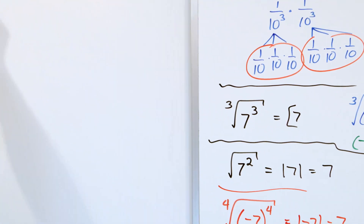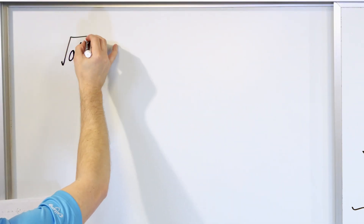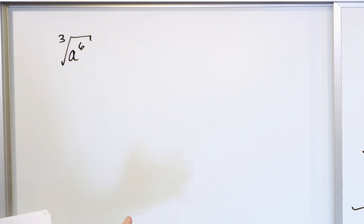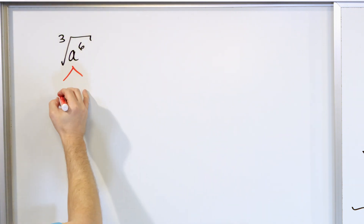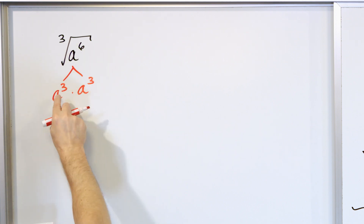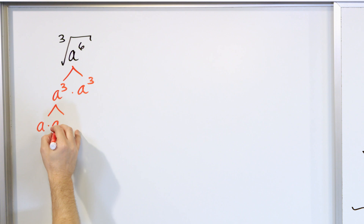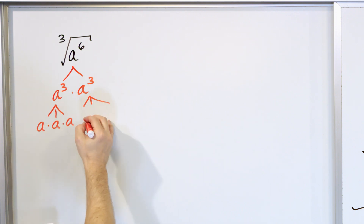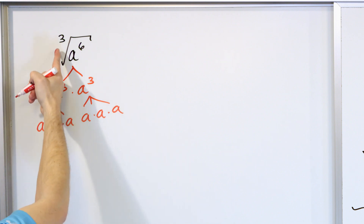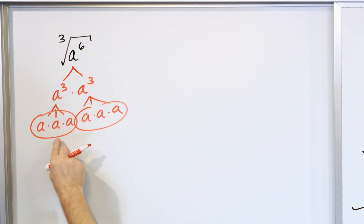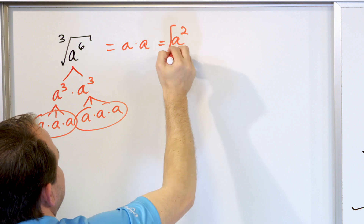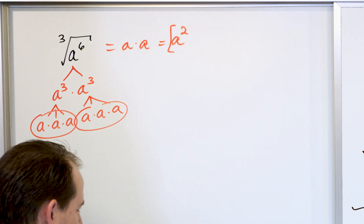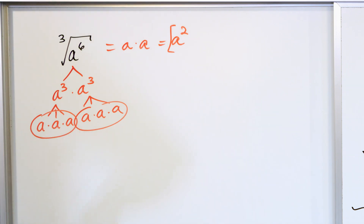Let's think about this with variables. If I have a to the sixth power and I'm going to take the cube root of that — this isn't a direct cancellation. I do a factor tree: a to the sixth is a cubed times a cubed, since 3 plus 3 equals 6. Each a cubed is a times a times a. I'm looking for triplets: here's one triplet giving me an a, and here's another triplet giving me another a. The final answer is a squared.